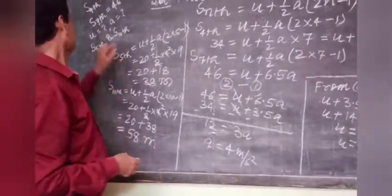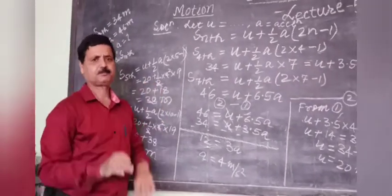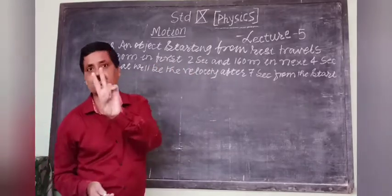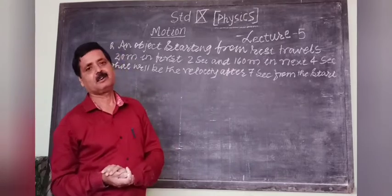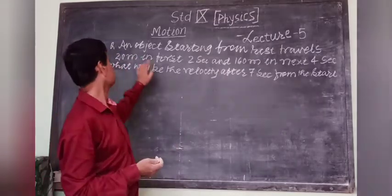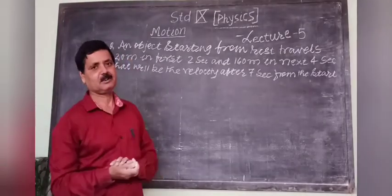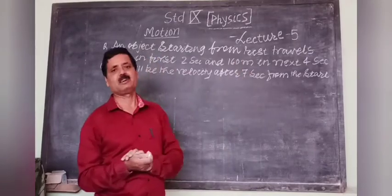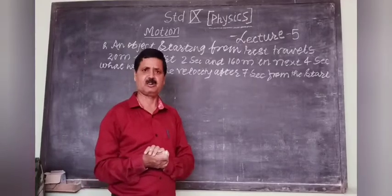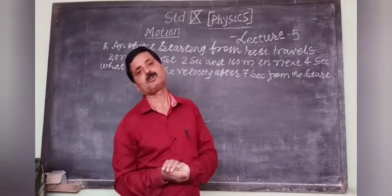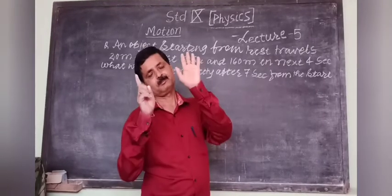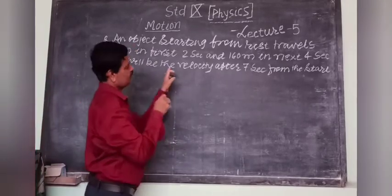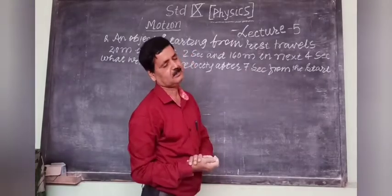These are the answers. Next problem: an object starting from rest travels 20 meters in the first 2 seconds and 160 meters in the next 4 seconds. Total distance is 180 meters in 6 seconds. We have to calculate its velocity after 7 seconds from the start.